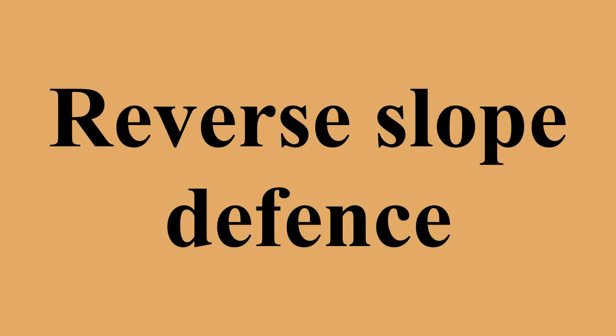Reverse slope defenses were very popular with the Japanese during the island campaigns in the Pacific Theater. American superiority in naval support artillery prompted the Japanese to shelter on reverse slopes until they could engage American troops at close range.